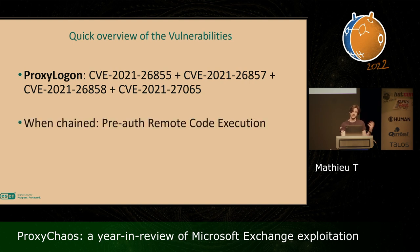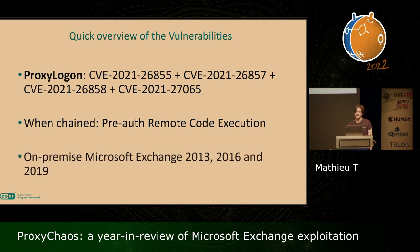When they are chained together, we get a pre-authentication remote code execution vulnerability, meaning that the attackers don't need a valid user account to be able to execute arbitrary commands on an unpatched Exchange server. These vulnerabilities affect the three most recent versions of Microsoft Exchange, namely Microsoft Exchange 2013, 2016, and 2019. The cloud versions, Exchange Online or 365, are not affected by these vulnerabilities.